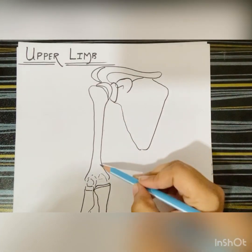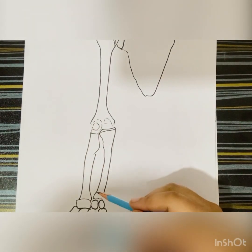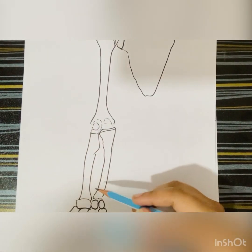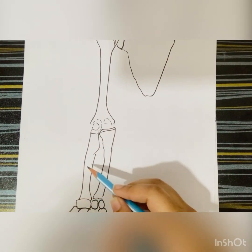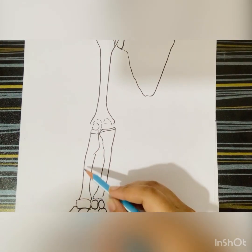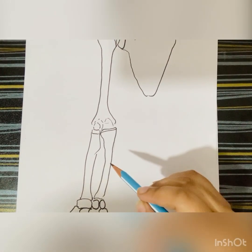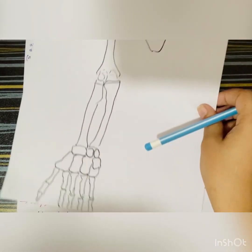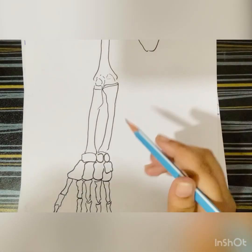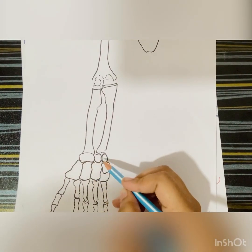The upper arm includes the humerus. Then the bones of the forearm, which include the radius — which is towards the thumb side, that is the lateral bone — and the ulna, which is the medial bone. Then the bones of the hand include carpal bones present in the wrist.